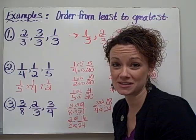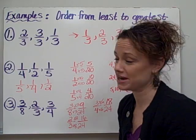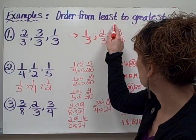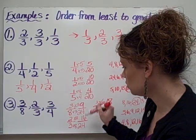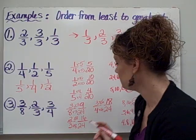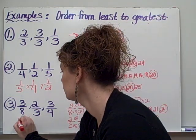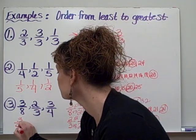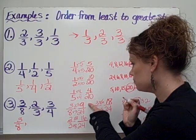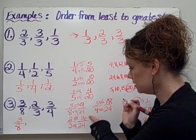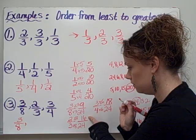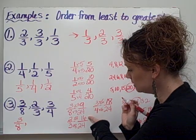My denominators are now all the same, and I can just focus on my numerators. My problem asked me to order from least to greatest, so I search for my smallest numerator, which is the 9. And that tells me that 3/8 is the smallest fraction. After that, it looks as if my next smallest is 2/3, which is the 16 as the numerator.